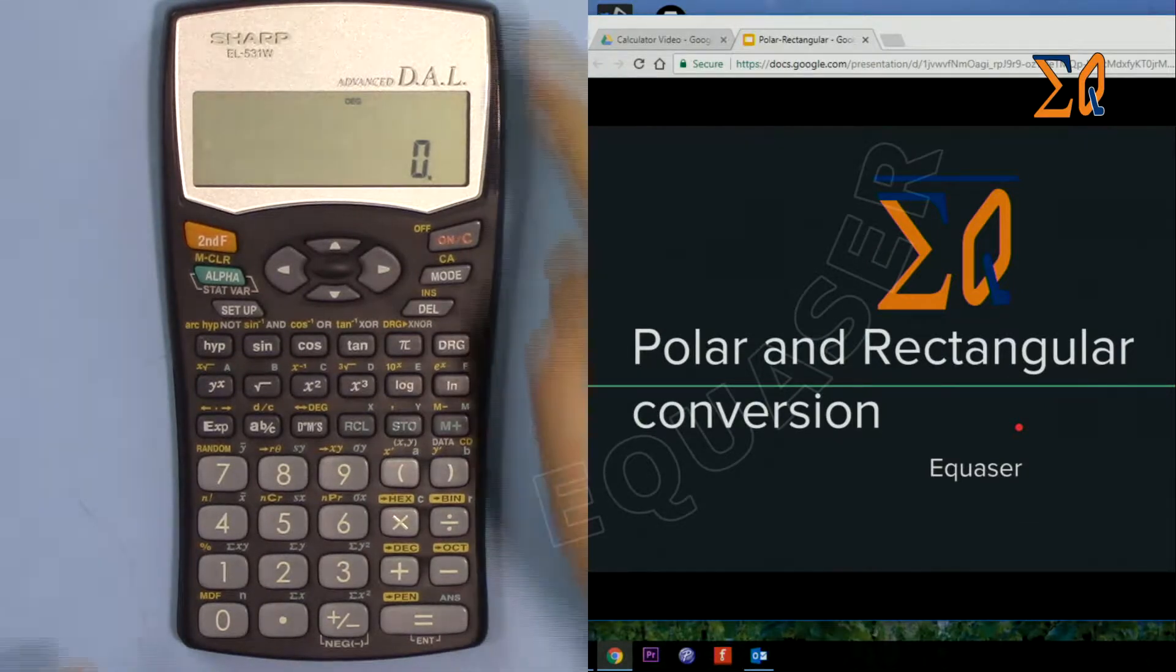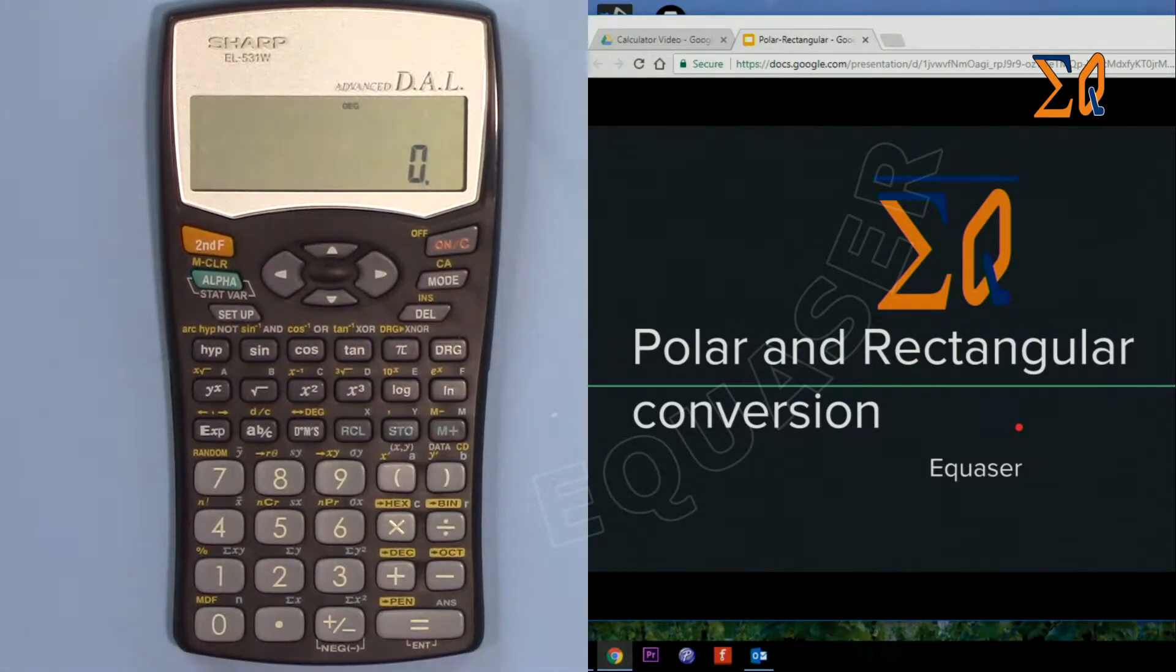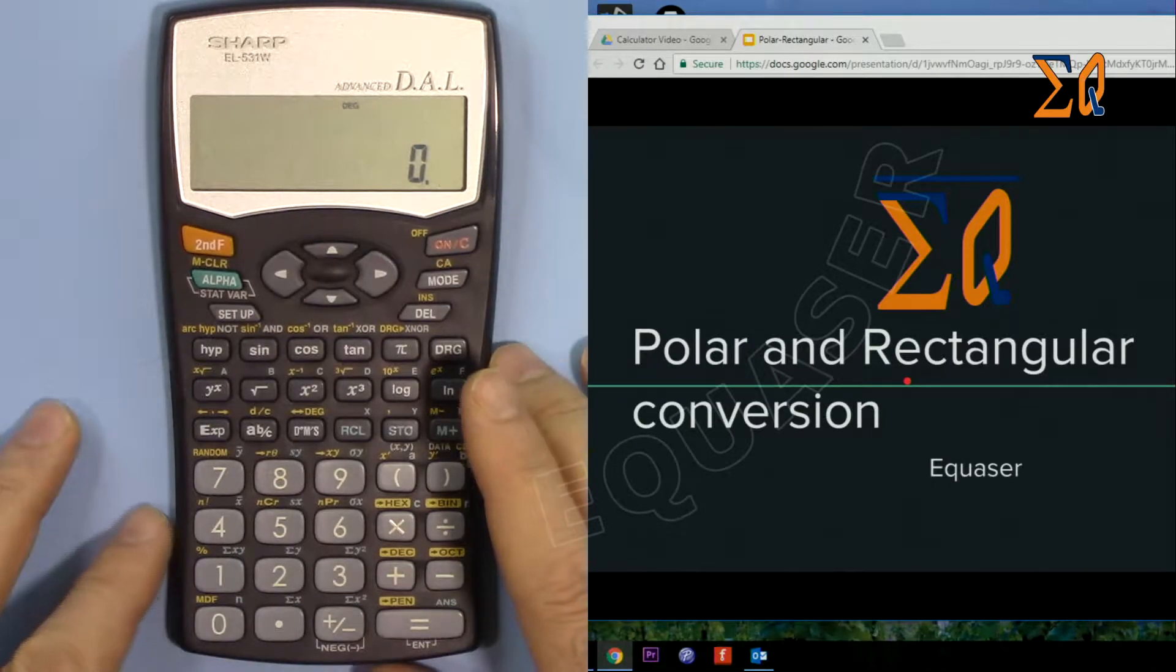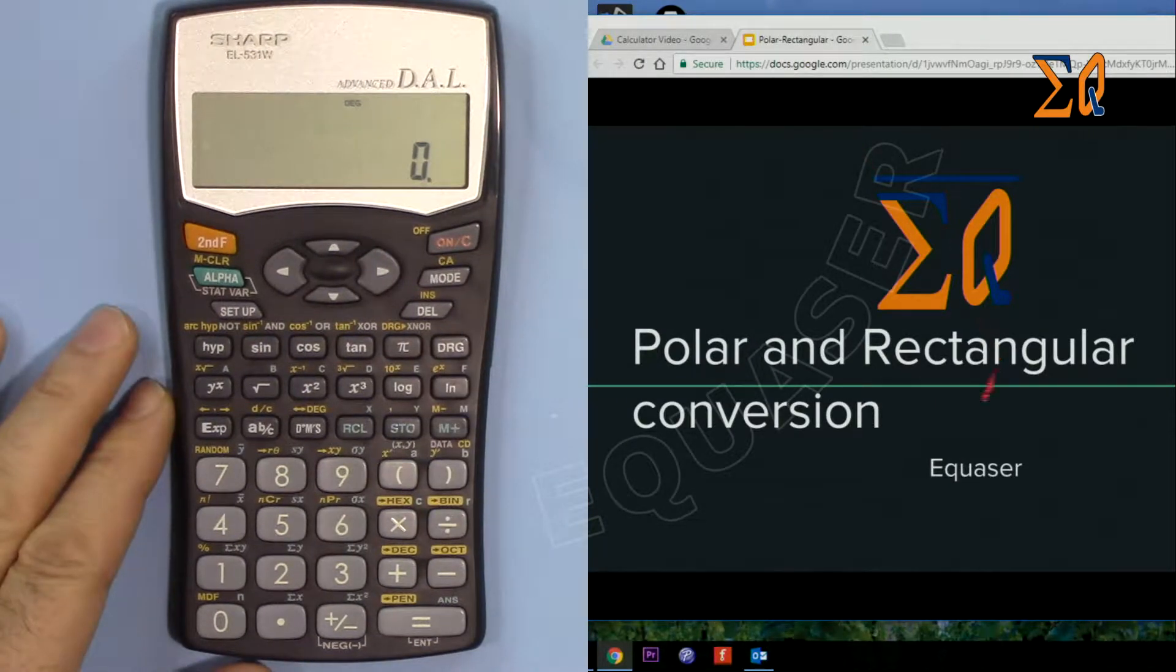Hi, welcome to Equasor. In this video, I'm going to show you how you can convert polar and rectangular coordinates one to the other using this Sharp EL531W scientific calculator. Rectangular is also sometimes called Cartesian.